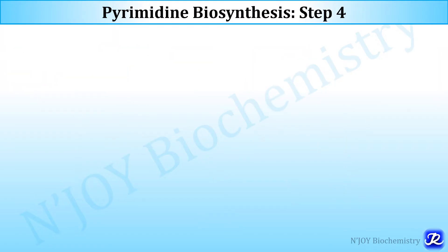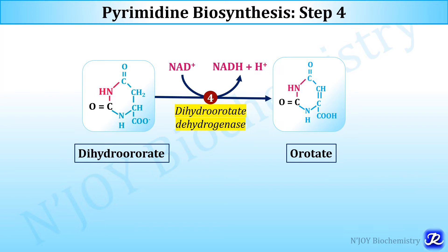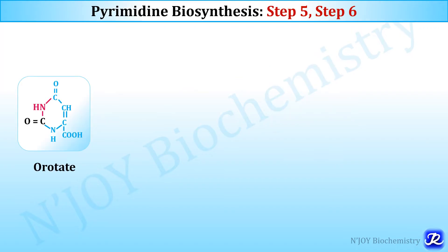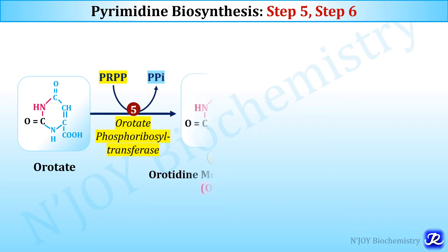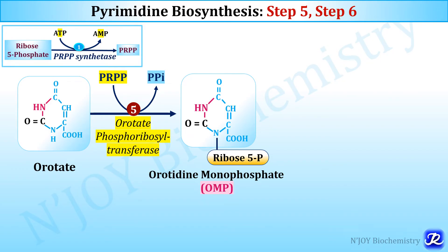In step 4, dihydroorotate dehydrogenase catalyzes formation of orotate from dihydroorotate, reducing NAD to NADH. In step 5, ribose-5-phosphate is added to orotate to form orotidine monophosphate (OMP), catalyzed by orotate phosphoribosyl transferase, with PRPP serving as the ribose-5-phosphate donor. PRPP is derived from ribose-5-phosphate by phosphoribosyl pyrophosphate synthetase.